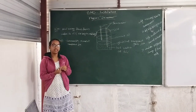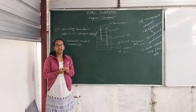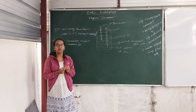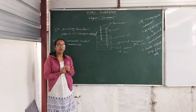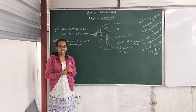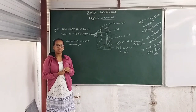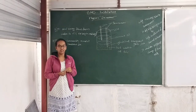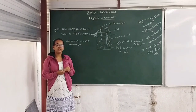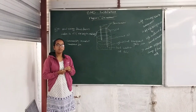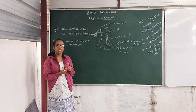Firstly, you want to take one container and pour water in that container and heat the water up to 60 degrees centigrade. After that, you want to take one cylindrical transparent glass jar and pour the hot water into that glass jar.